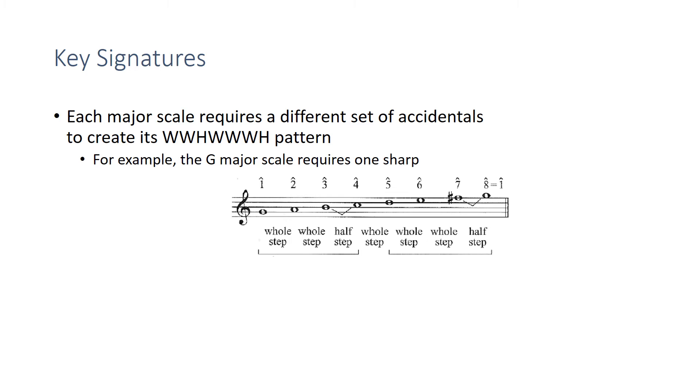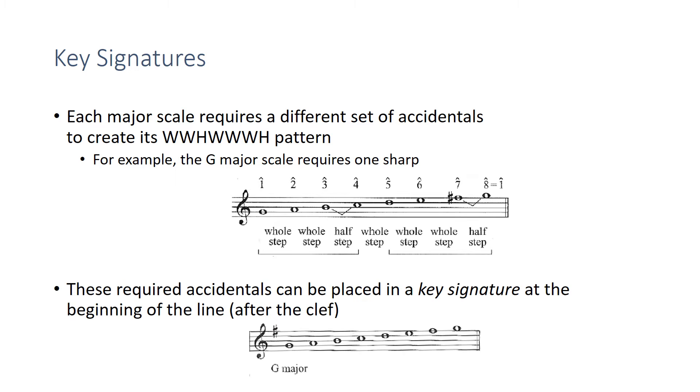For example, in G major, one sharp is required, and that sharp is F sharp. Since an F sharp is always needed, we can put that required accidental in the key signature at the beginning of the line. This occurs right after the clef and before the time signature. So in the key of G major, F sharp is always played, no matter in what octave.